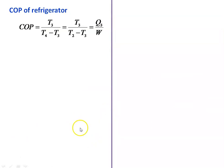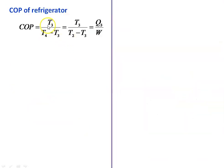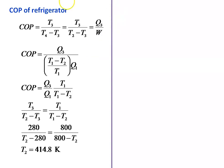The COP of the refrigerator equals T3 divided by (T4 minus T3) — the temperature of the refrigerator space divided by the work done, so T3 by (T4 minus T3). From the condition of the problem, T2 equals T4, so T4 equals T2. Therefore T3 by (T2 minus T3) equals Q3 divided by W. COP equals Q3 divided by W — desired effect divided by work input.